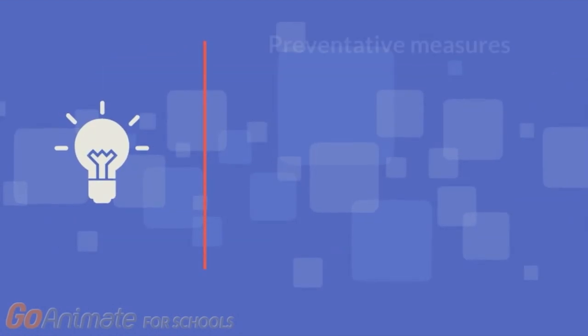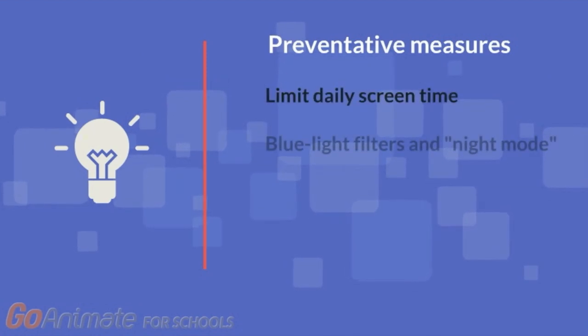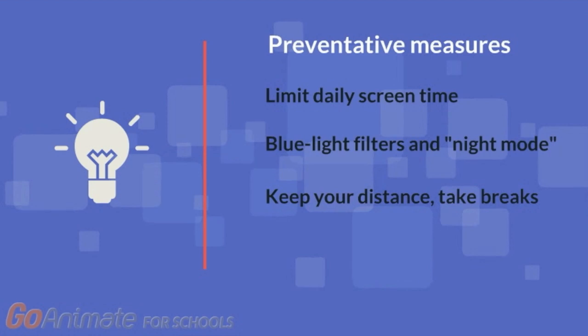There are many ways to prevent the progression of damaging effects by blue light and excessive digital screen use. Firstly, try reducing or limiting daily screen time. Also consider using blue light filters on your computer screen or enable the night mode feature on your phone. Make sure to keep a proper distance between your eyes and the screen and make sure to take frequent breaks during screen use.